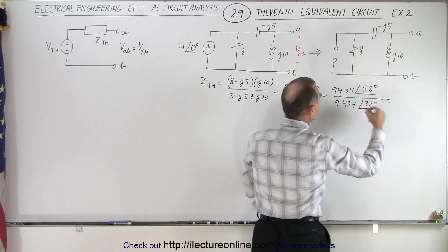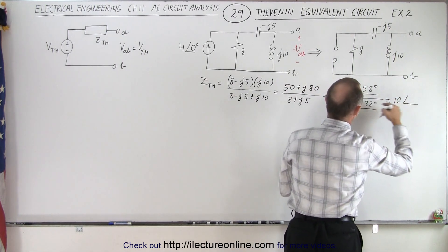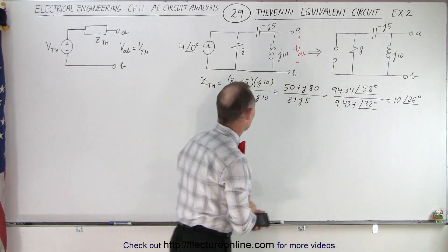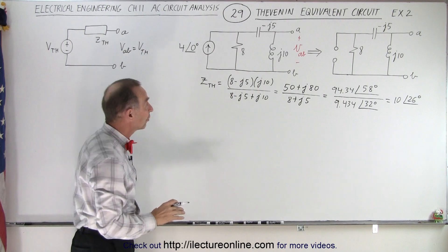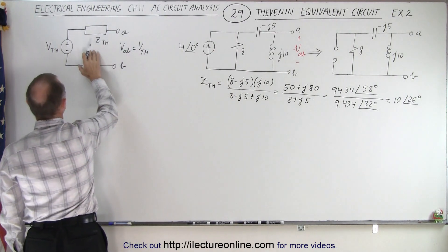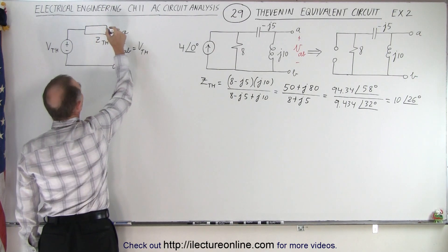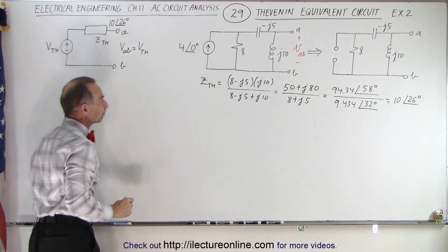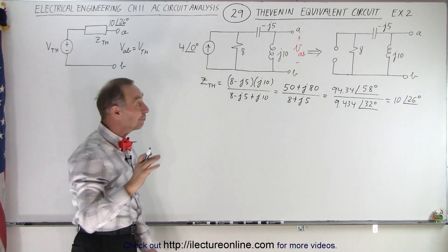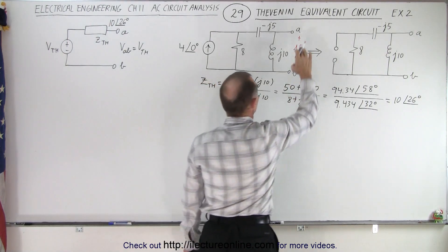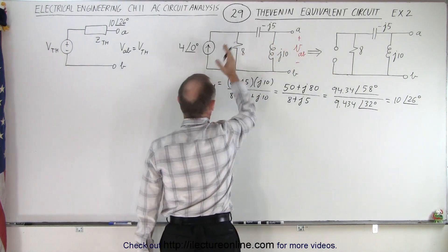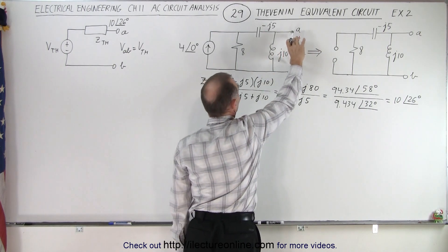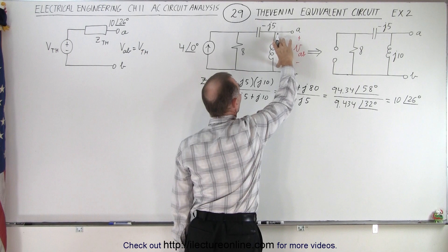So this would be equal to 10 with a phase angle of 26 degrees. That's the Thévenin impedance — the equivalent impedance — so we can simply call that 10∠26°. Now, how do we find the voltage across from A to B? We go back to the circuit on the left, and notice that the voltage across from A to B is the same as the voltage across the inductor.